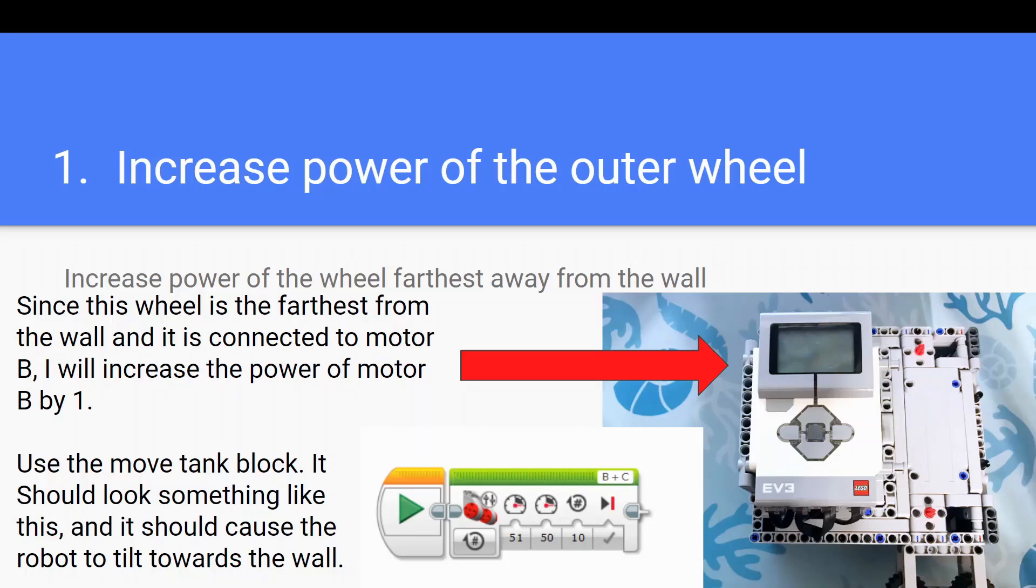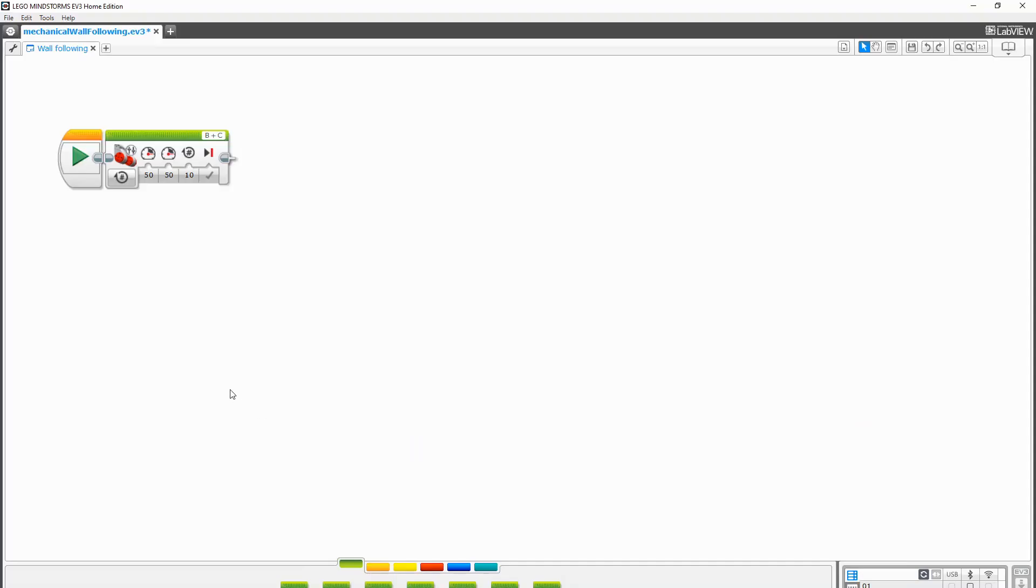On my robot, the motor we need to change is the B motor, so we will increase the power of the B motor from 50 to 51. What this change does is basically tilt your robot towards the wall a little bit, which will help your wall follower stick to the wall better.